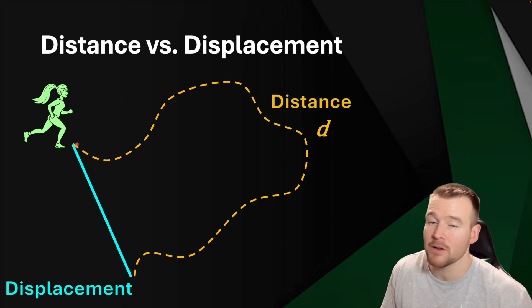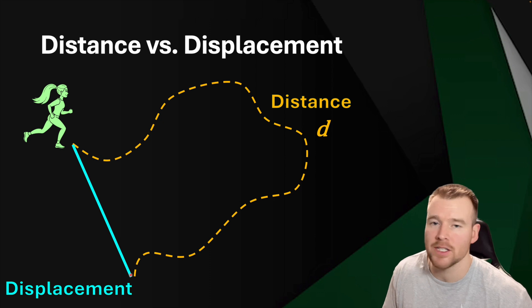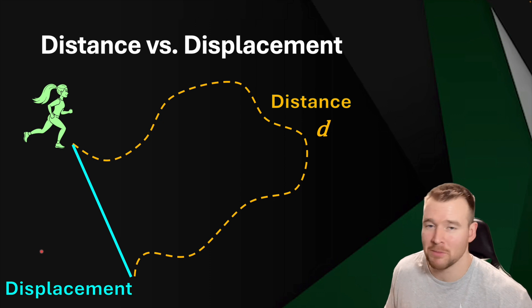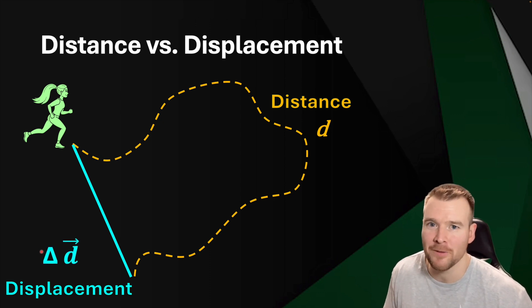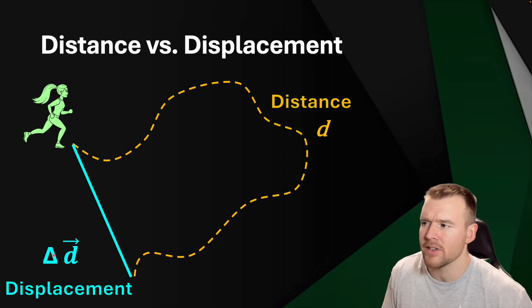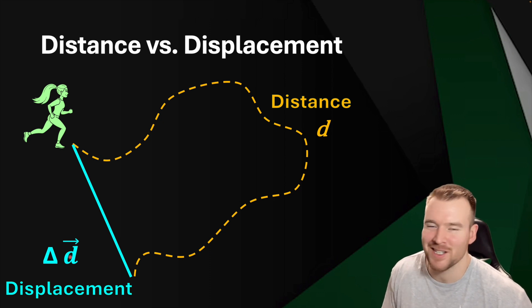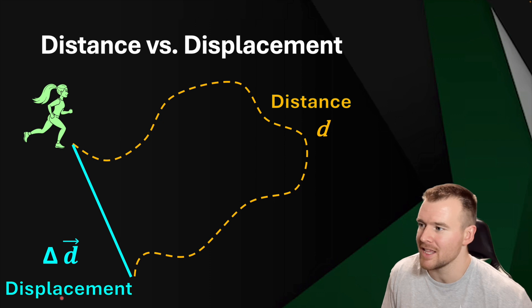Displacement shows where we changed our position — we started here and after all this movement, our overall direction was down and to the right, maybe a little south and east on a map. That's our displacement from start to end. Because it starts with a D, we write it as ΔD — the triangle means 'change,' and the D represents position, so it means 'change in position.' The arrow on top tells us it is a vector. So change in position, that's a vector — that is displacement.